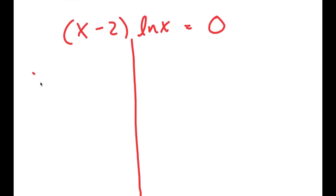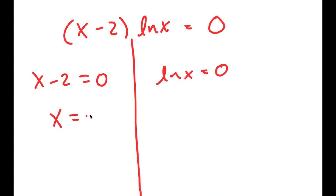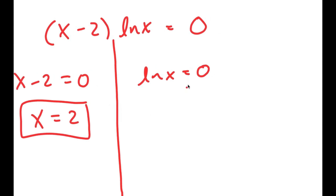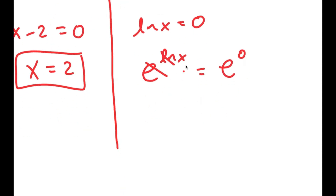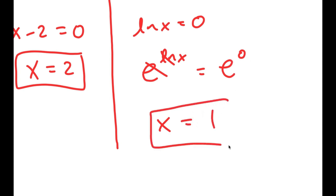So now I get two equations: x minus 2 equals 0, and ln of x is equal to 0. For x minus 2 equals 0, that simply means x equals 2. And for ln of x equals 0, I'm going to take e to the power of both sides. These two cancel out, so I'm left with x is equal to e to the power of 0, which is 1. So these are my two solutions.